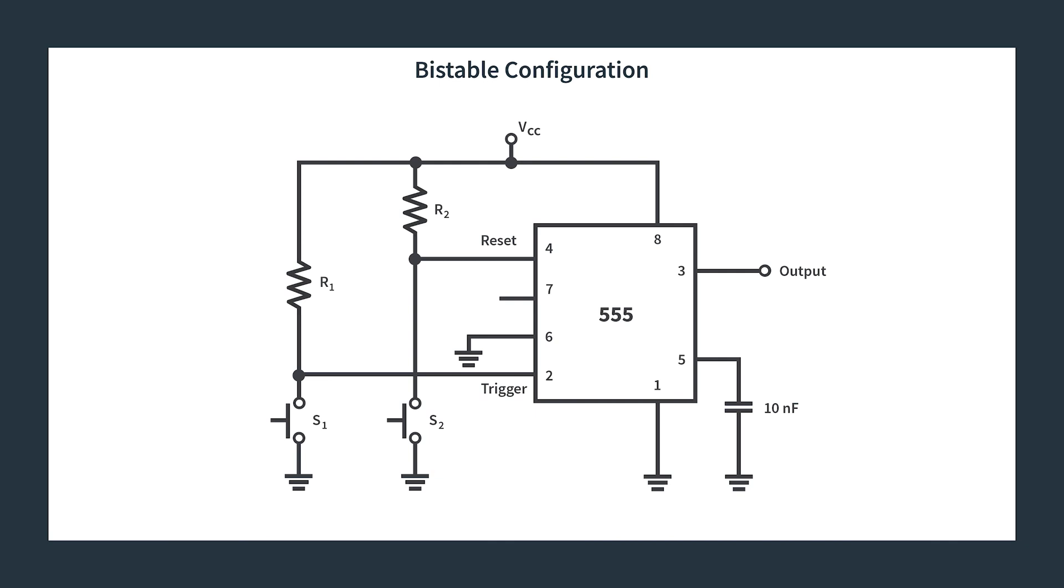So here we have the 555 timer. Let's just go over the more boring aspects really quick. You have pin eight, that's the power that needs to be connected to VCC. Pin one is ground that needs to be connected to ground. Pin three is the output, where we will be hooking up our oscilloscope.